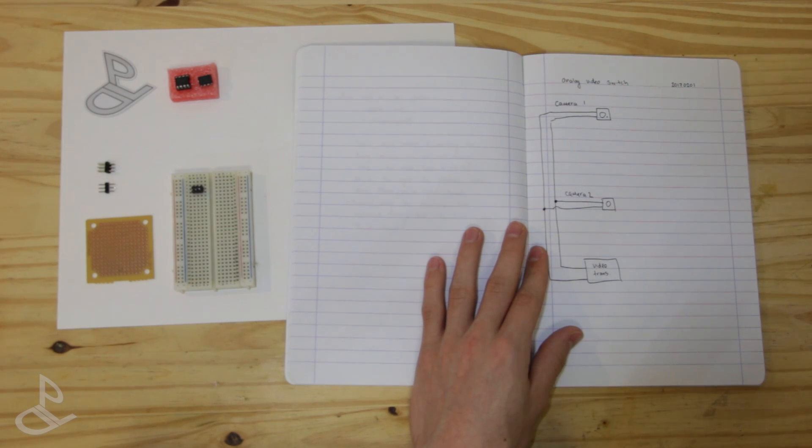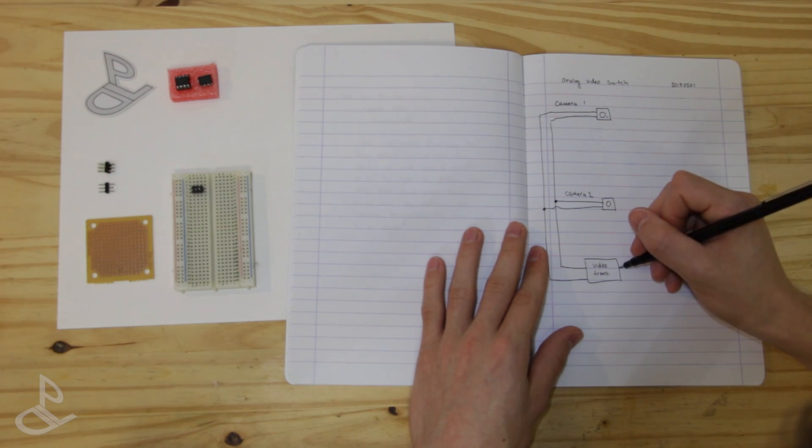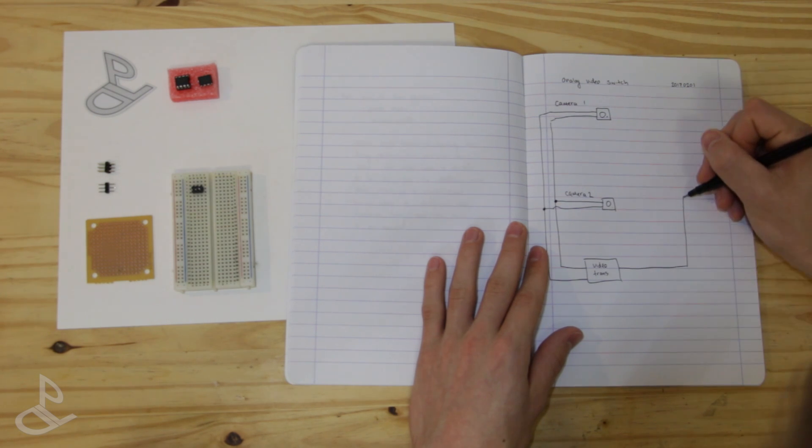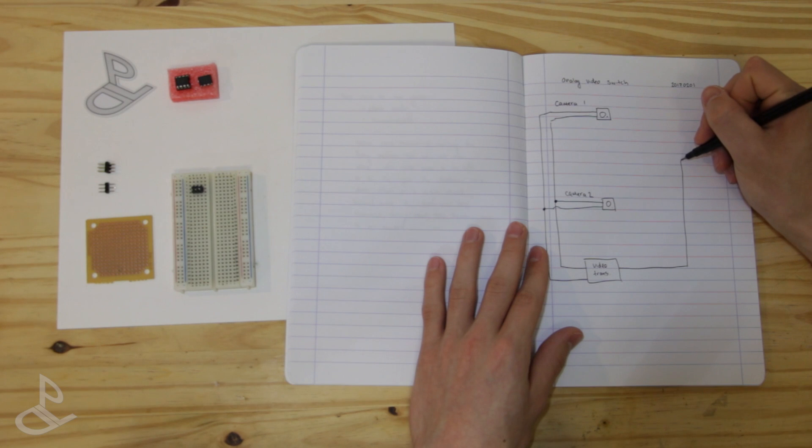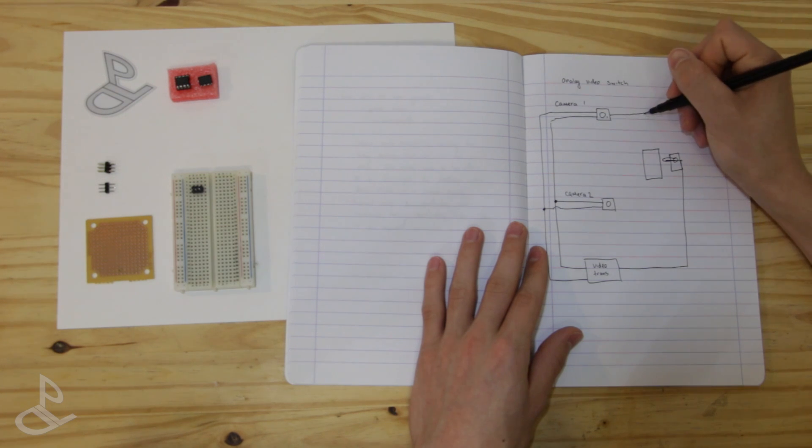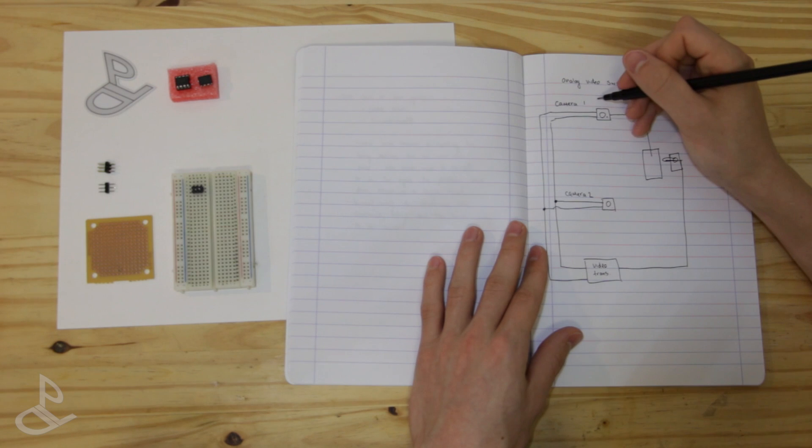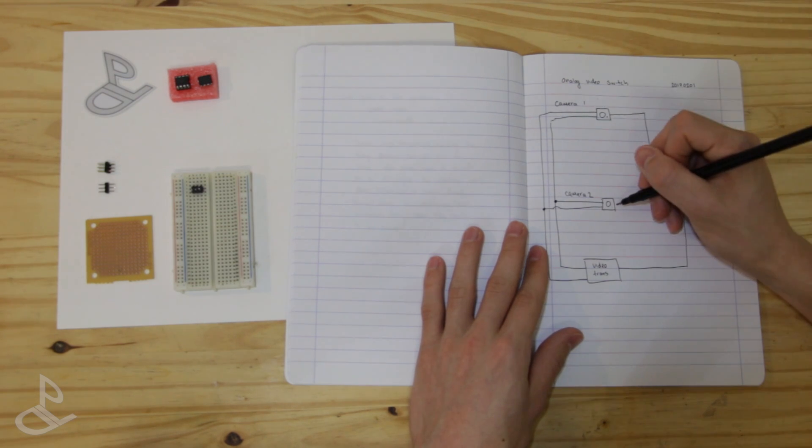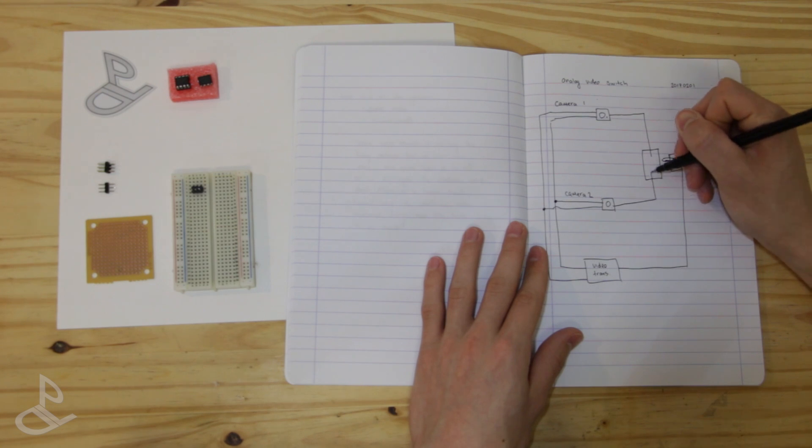And here is where it gets interesting. The way this works is we are going to have the video signal coming out. And the wire is going to be attached to a servo. And then we are going to have a little board over here. And we are going to solder on the video signal from one of the cameras to one side. And then the video signal of the second camera to the other side.